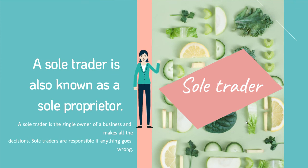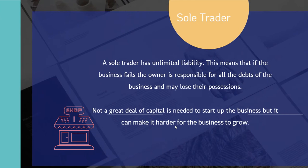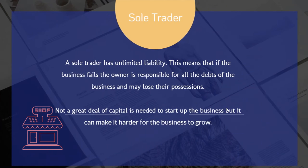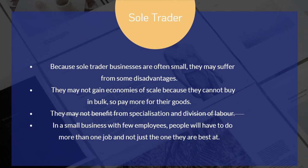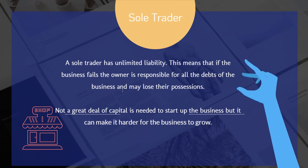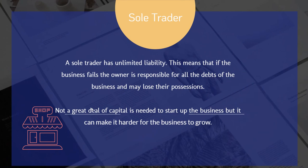The first thing we're going to talk about is a sole trader, also known as a sole proprietor. A sole trader is the single owner of a business and makes all the decisions. Sole traders are responsible if anything goes wrong. A sole trader has unlimited liability, which means if the business fails, the owner is responsible for all the debts of that business.